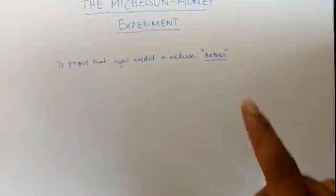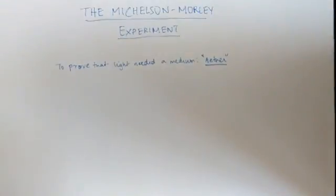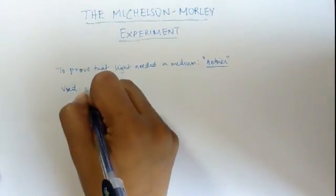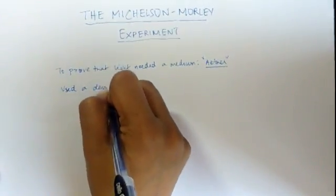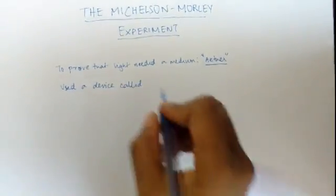And they thought that ether was what filled empty space. So to prove this, they used an apparatus called interferometer.